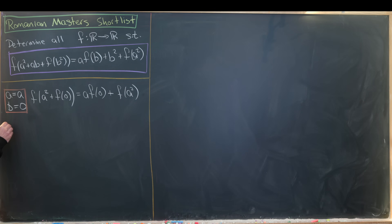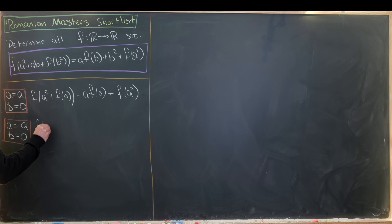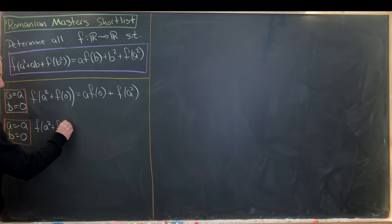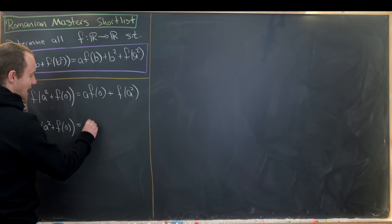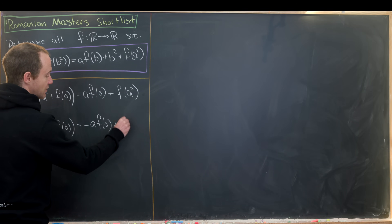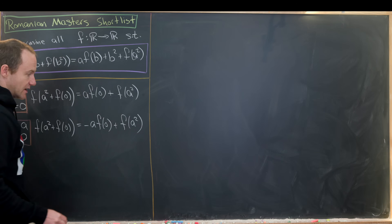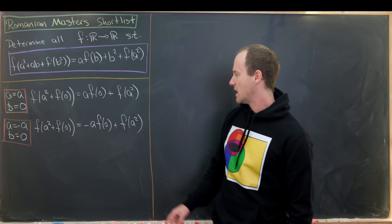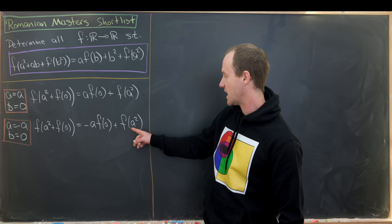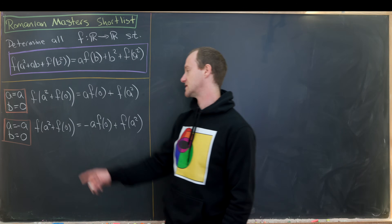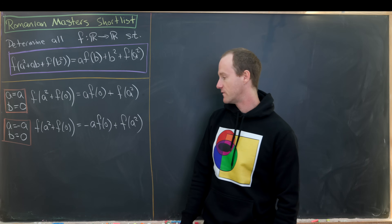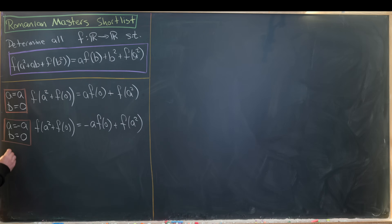So we can come up with a similar formula by replacing a with -a and keeping b = 0. That leaves us with f(a²) + f(0) = -f(0) + f(a²). Most of these terms are the same, so the two left-hand sides match, giving us motivation to subtract these two equations.